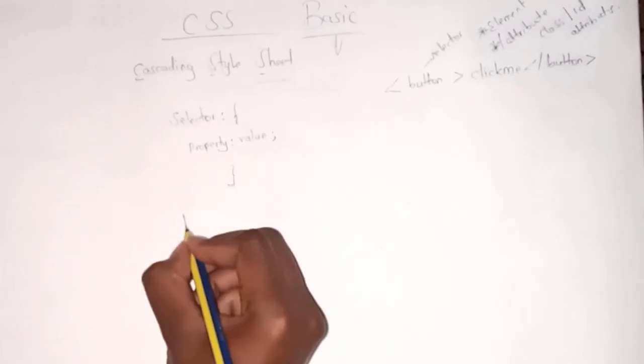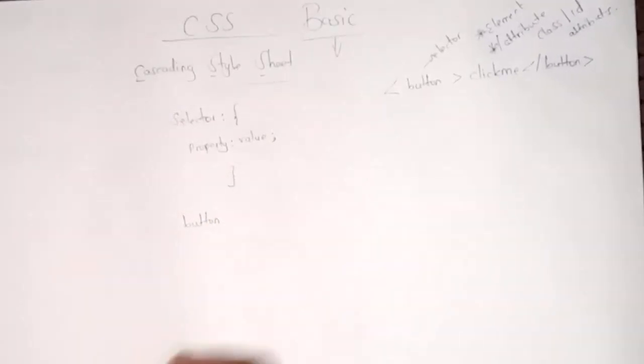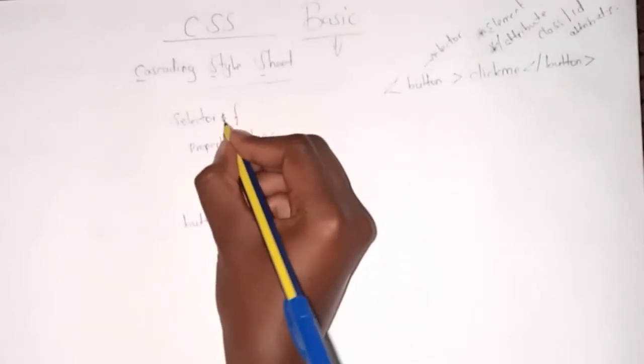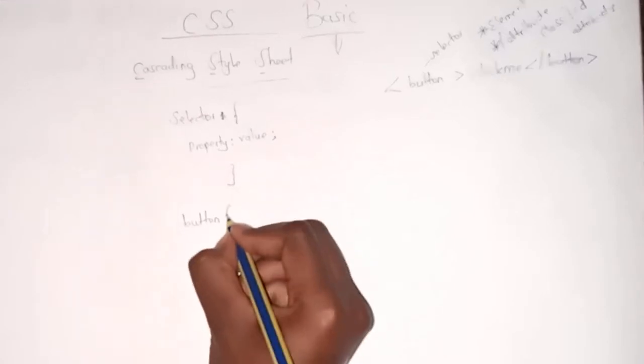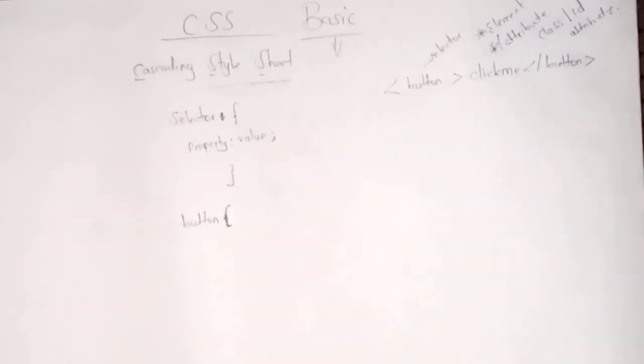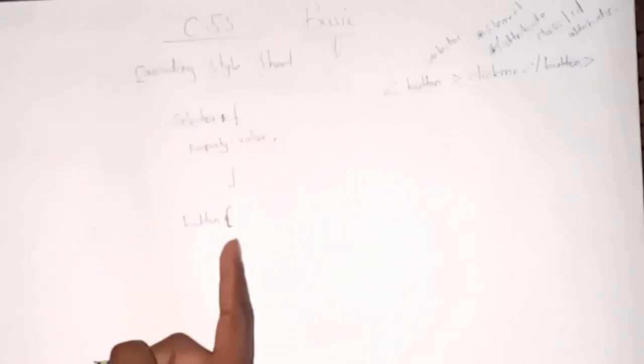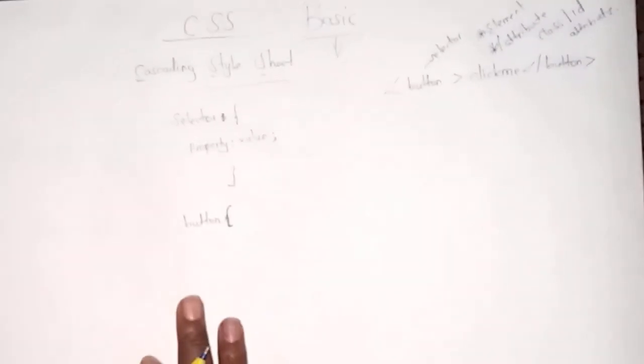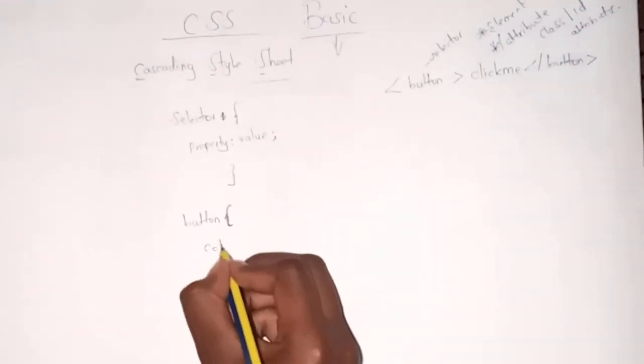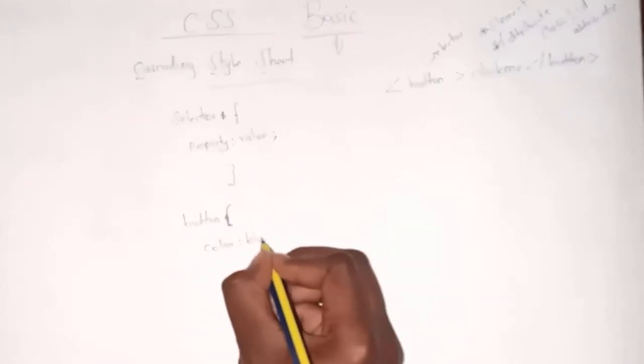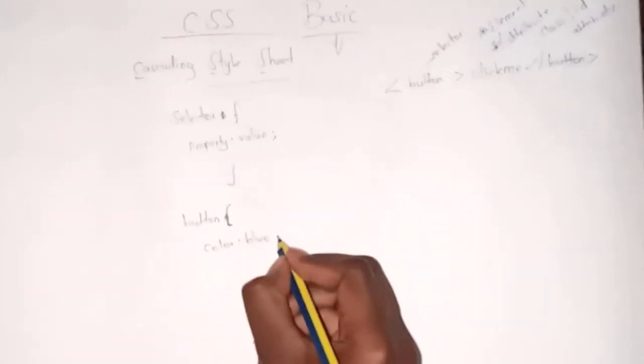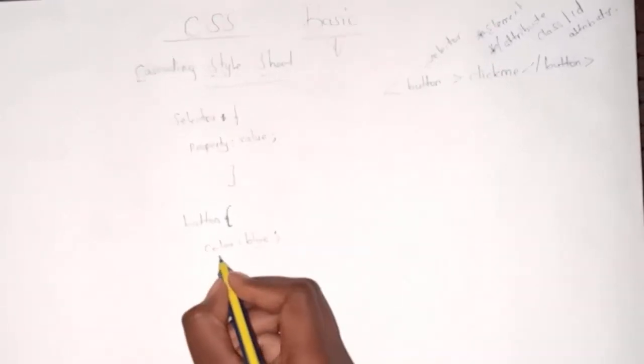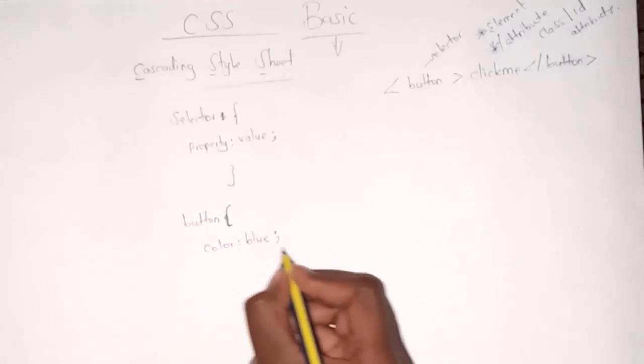When we say a selector, this button comes and it's written as button. Then the property—what style do we want it to have? For this button, I think I want the color to be blue. That's a property and its value is blue. Values change, so it can be blue, green, or orange, but the color property is standard.